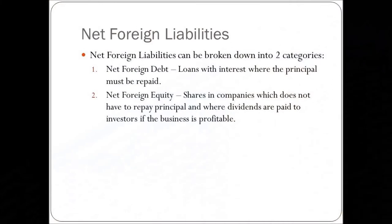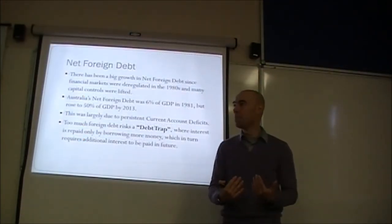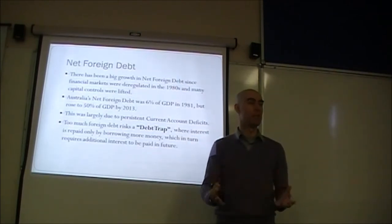Net foreign liabilities break down into two categories: net foreign debt — loans with interest where the principal must be repaid — and net foreign equity — shares in companies that do not require principal repayment, with dividends paid only if the business is profitable. There has been big growth in net foreign debt since financial markets were deregulated in the 1980s. Many capital controls were also lifted around the world, removing barriers to the movement of money.